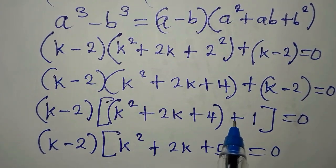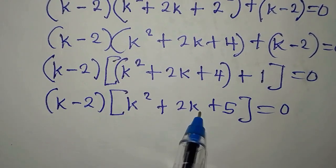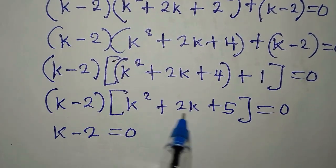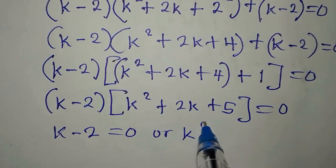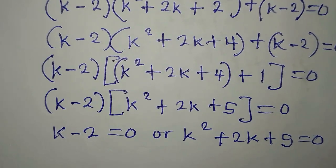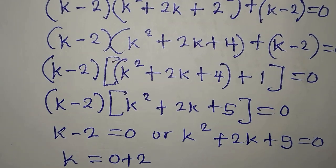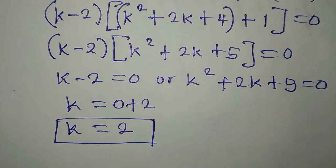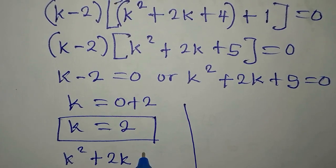We now apply the zero product rule, since two factors multiply to give zero. It is either k minus 2 equals zero, or k squared plus 2k plus 5 equals zero. From the first factor, k equals 2. That is our first solution.